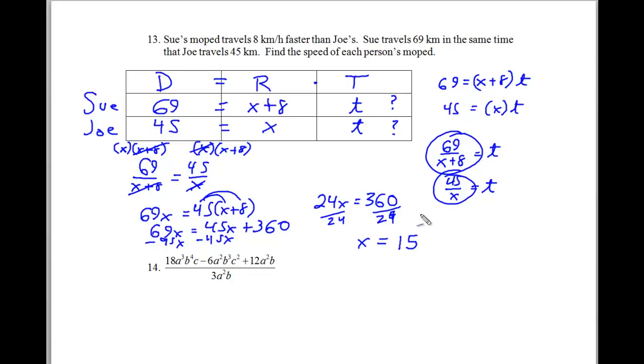So Joe's speed is 15 kilometers per hour. That means Sue's speed is going to be 8 faster than that. So we just add 8 to the 15. And that makes a total of 23 kilometers per hour. And there we go. That will give us what we need there.